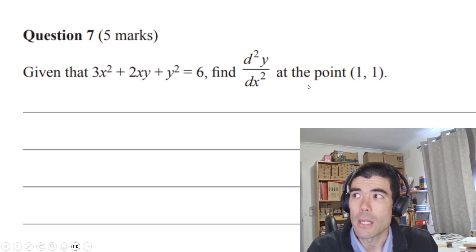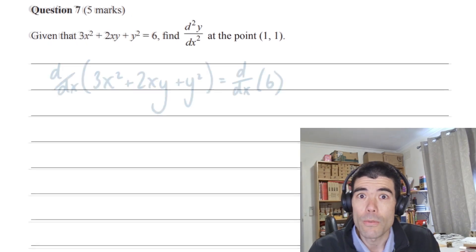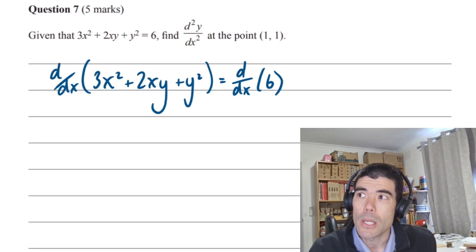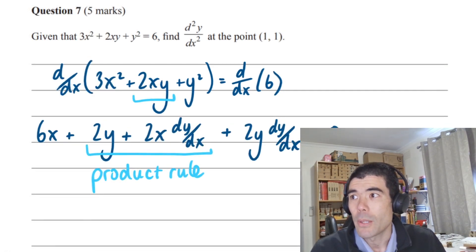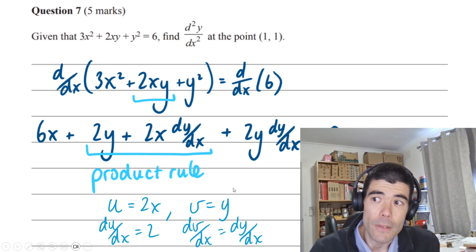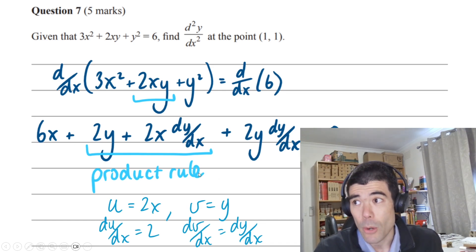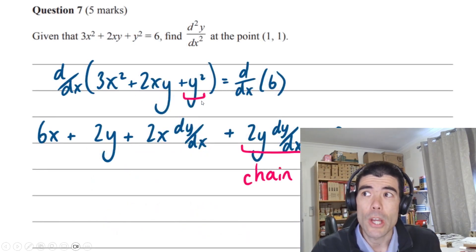To start off with implicit diff, we want to take the derivative of both sides with respect to x. Because we've got y here on the left hand side, y itself is a function of x. To differentiate 2xy, we need to use the product rule. If we let u be 2x and v be y, then using the product rule, our derivative will be 2 times y plus 2x times the derivative of y. For the y squared term, we use chain rule, bring the 2 down, so 2 times y, but then multiply by dy/dx.